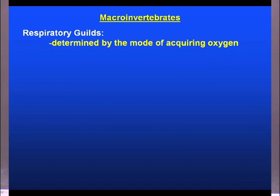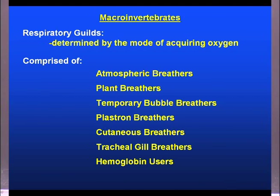Moving on to respiratory guilds — oxygen is a very important factor in streams and one of the parameters you measure as a citizen monitor. Different macroinvertebrates acquire oxygen differently. The respiratory guilds are comprised of atmospheric breathers, plant breathers, temporary bubble breathers, plastron breathers, cutaneous breathers, tracheal gill breathers, and hemoglobin users.